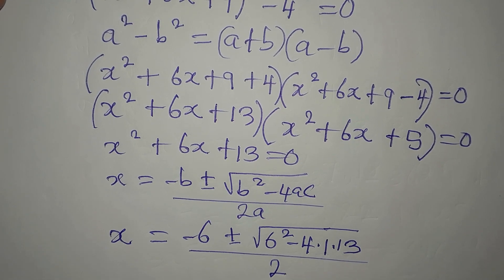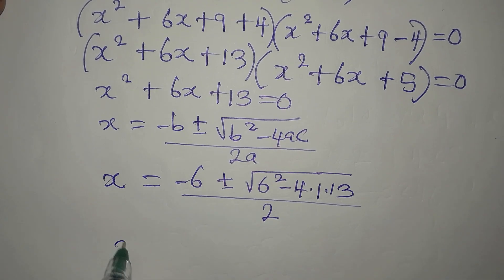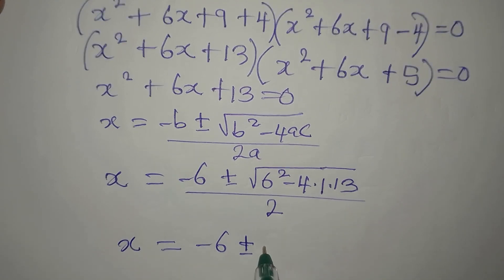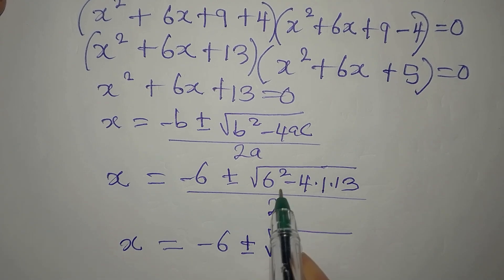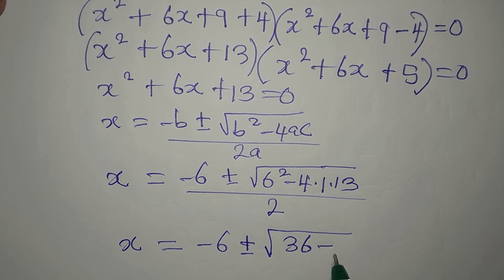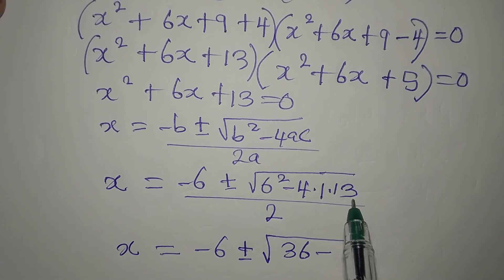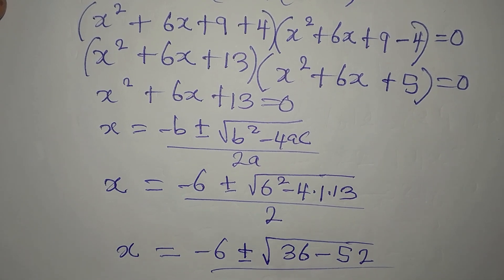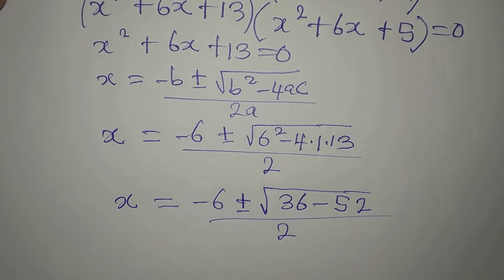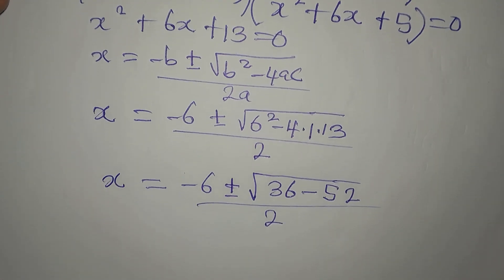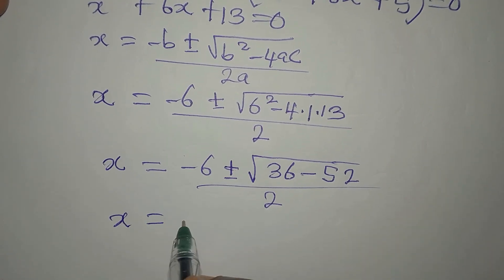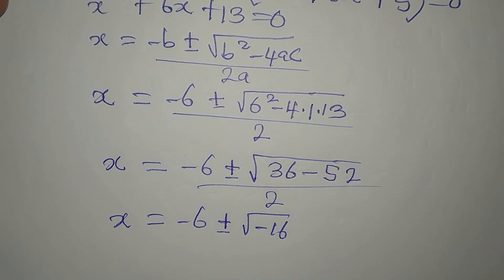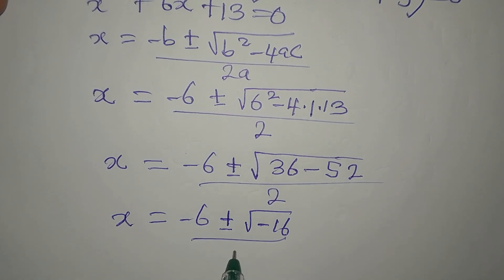We divide all of this by 2 times 1, which gives 2. So x equals minus 6 plus or minus the square root of 6 squared, which is 36, minus 4 times 1 times 13, which gives 52, all over 2. Continuing, x equals minus 6 plus or minus the square root of negative 16, divided by 2.